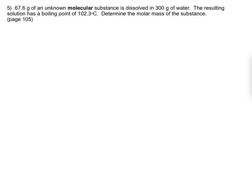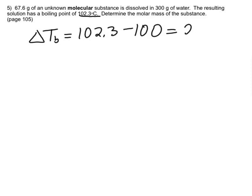So here we have a solution of water that has a boiling point of 102.3 degrees. And normally we know that the boiling point of water is 100 degrees, so we can figure out the change in the boiling point is the difference between 102.3 and 100.